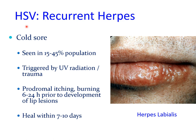One of the most recognized patterns of recurrent herpes in adults is cold sore or herpetic labialis, seen in 15 to 45 percent of the population, usually triggered by ultraviolet radiation or trauma. It is characterized by prodromal itching and burning sensation on the lip, 6 to 24 hours prior to the development of lip lesions which tend to ulcerate. From your clinical policies, if a patient presents with a cold sore, you should postpone active treatment until the lip lesions have healed, usually in 10 to 14 days.